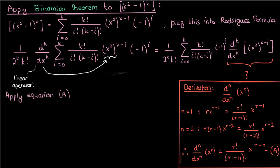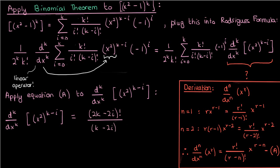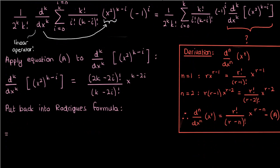Let's apply this derived expression to the kth derivative of x squared to the power k minus i. The power on x here is 2k minus 2i, because 2 times k minus i is 2k minus 2i. So the kth derivative is just 2k minus 2i factorial over 2k minus 2i minus k factorial times x to the power k minus 2i. Let's now take this expression and put it back into our Rodriguez formula, and here's what we'll end up with.